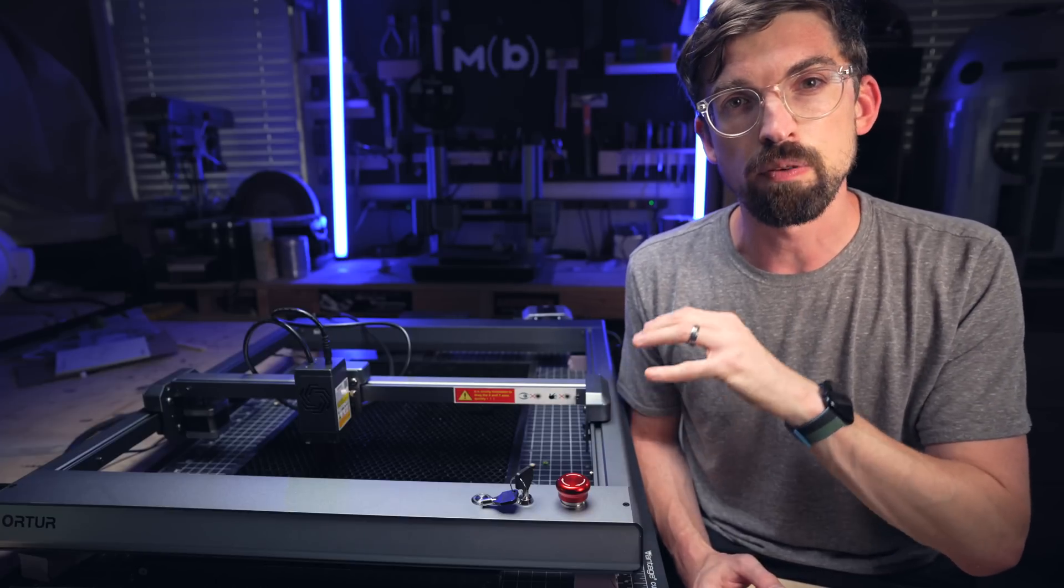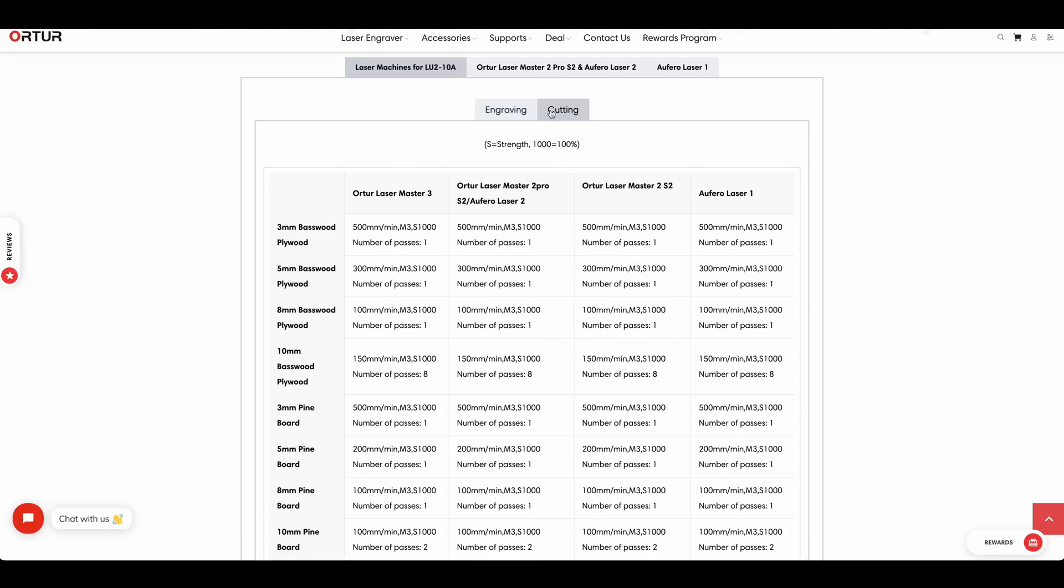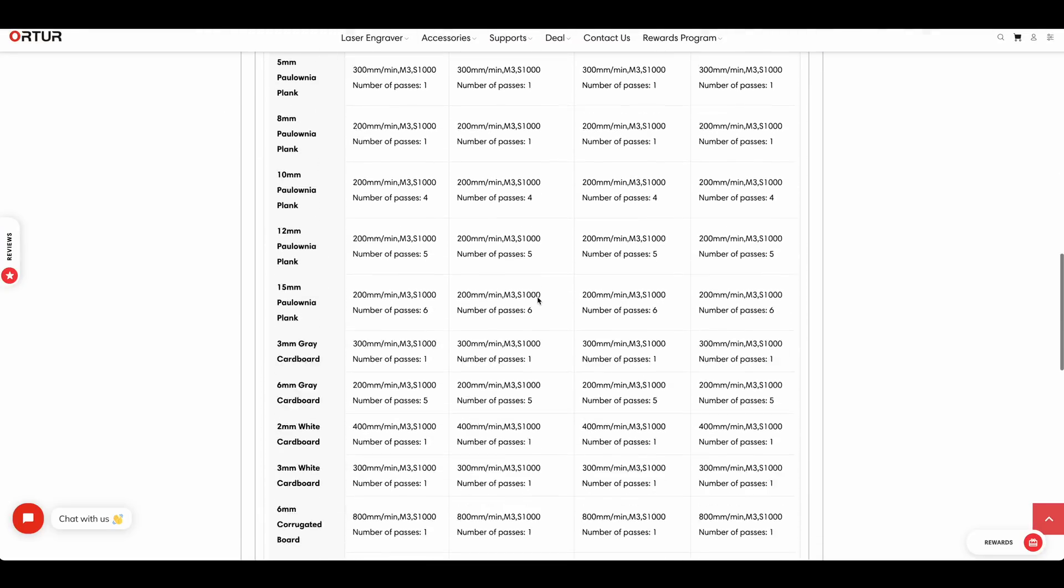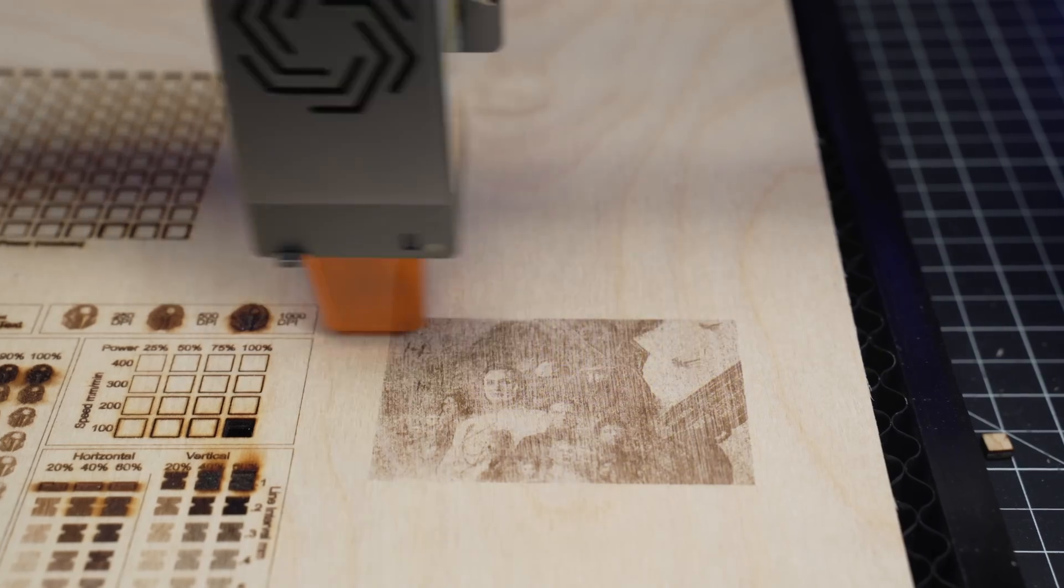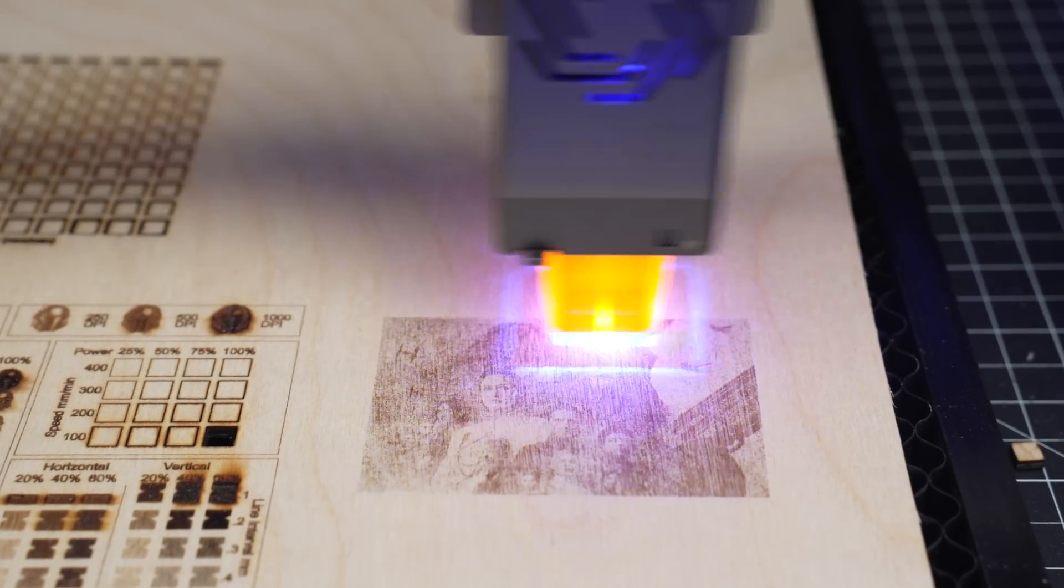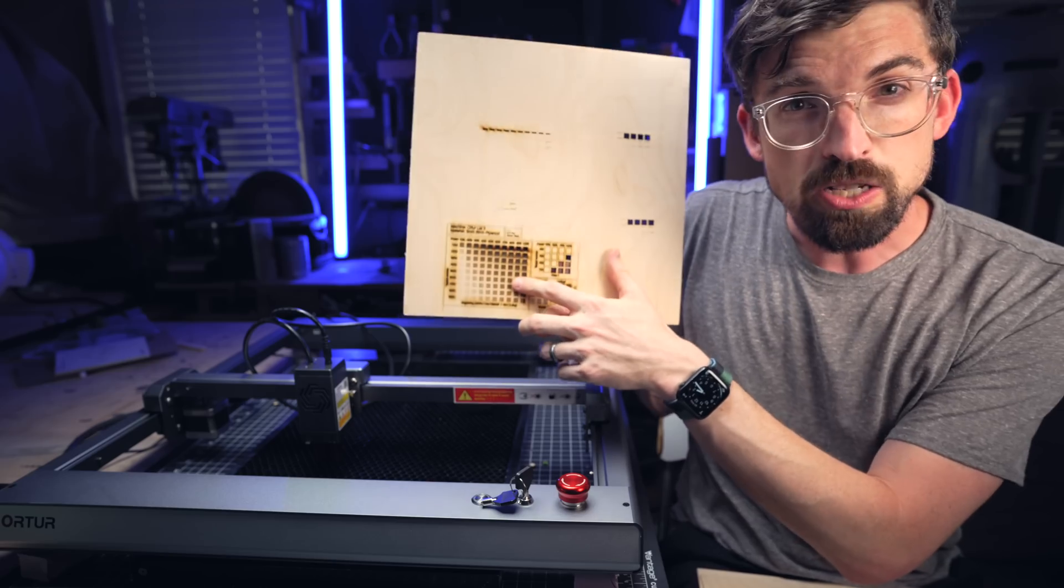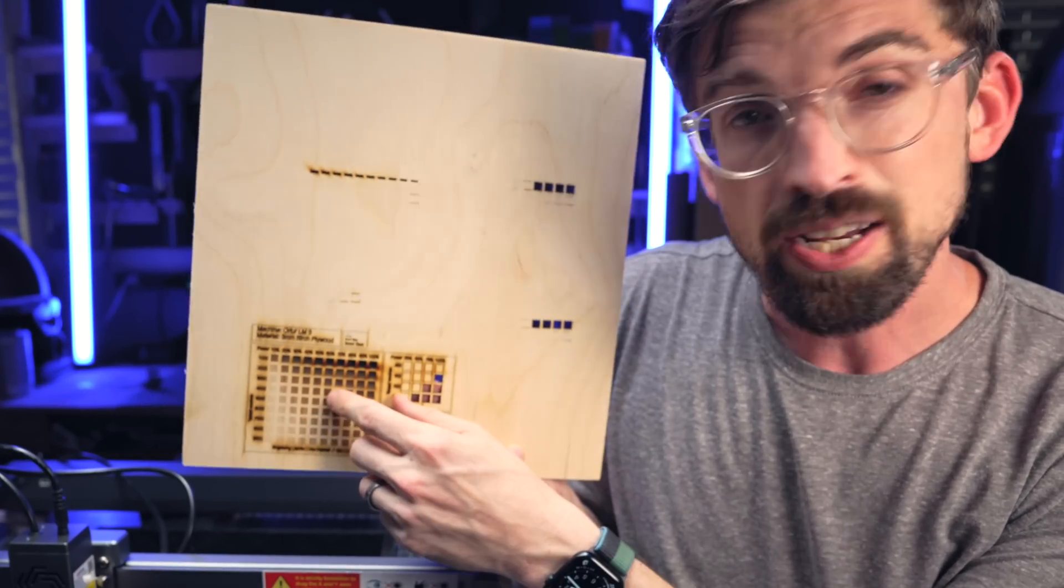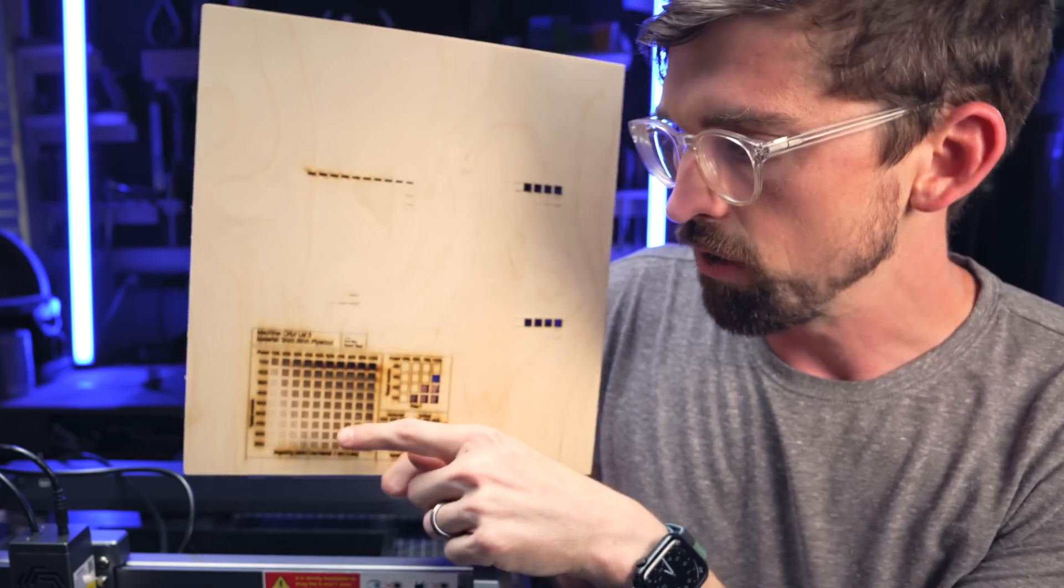And one really nice thing that they have provided is actual recommended settings for all of their major machines for a bunch of different materials, whether you want to engrave or cut it. Now I will say I used their setting for my birch plywood. And I did find that running it as fast as they recommended didn't really give me the dark result that I was looking for for my photo engrave. So I had to drop that speed down. And that's why I definitely recommend using these cutting tests, because especially when you're doing this grid, you're really going to be able to see the best setting to where you're getting the dark color, but it's not really engraving into the material. So you can still run it at higher speeds.